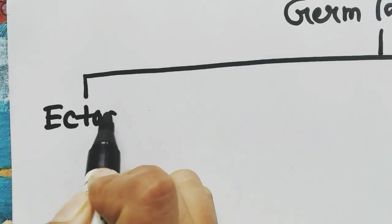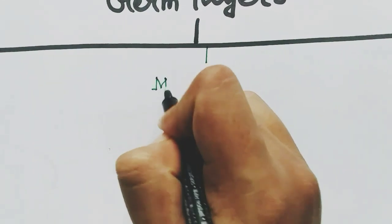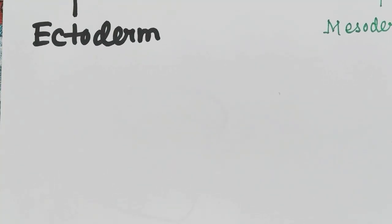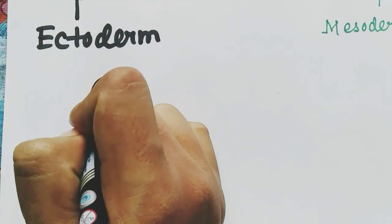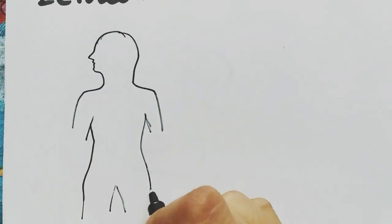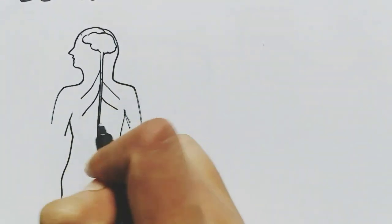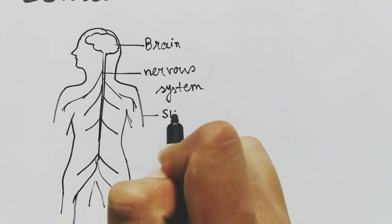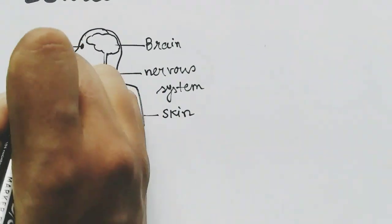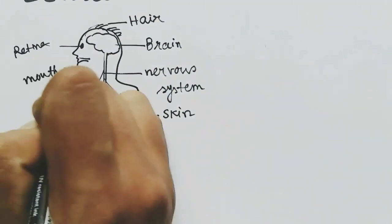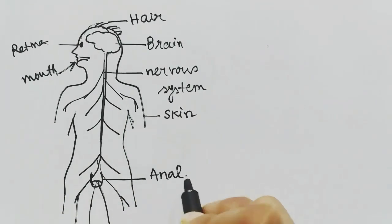Now, which germ layer makes which organs in the mature human? The ectoderm makes the outer skin of the body, the brain, the spinal cord, and the whole nervous system. The skin, the retina of the eye, the hair, the mouth, and also the anal canal are made by the ectoderm.